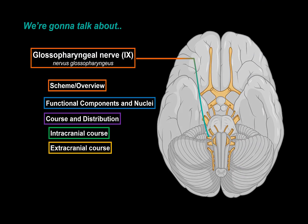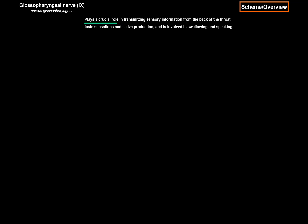Let's start by making a little scheme, and then we will start talking about it in detail. The glossopharyngeal nerve plays a crucial role in transmitting sensory information from the back of the throat, taste, sensation, and saliva production, and it's involved in swallowing and speaking. This nerve has altogether four nuclei located within the medulla oblongata.